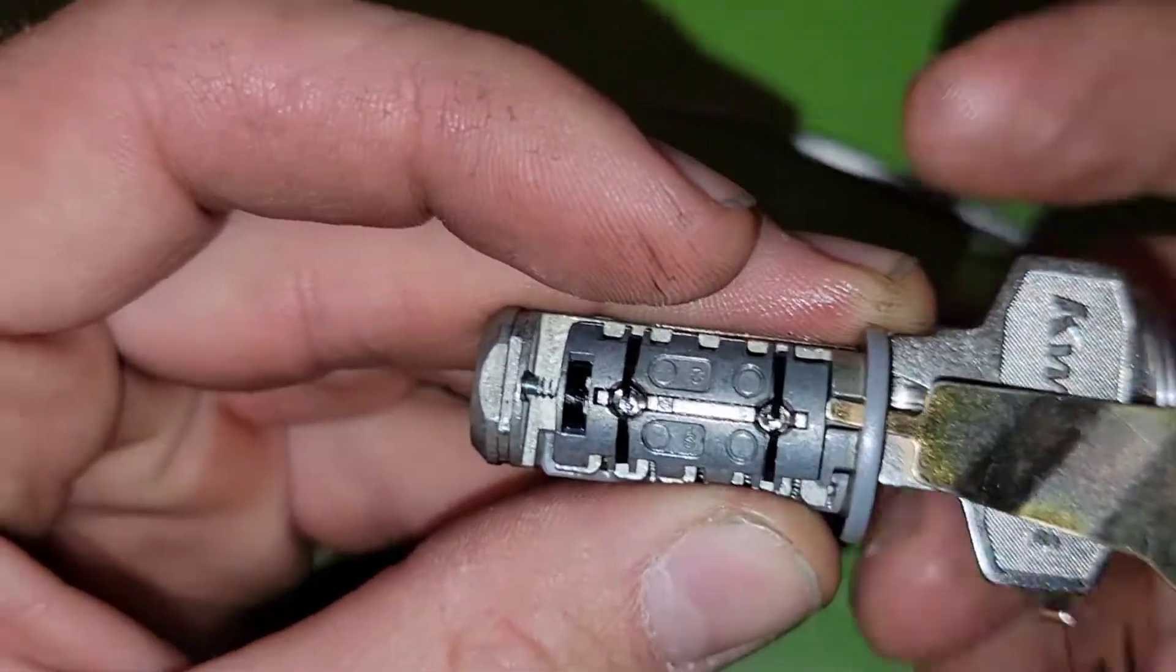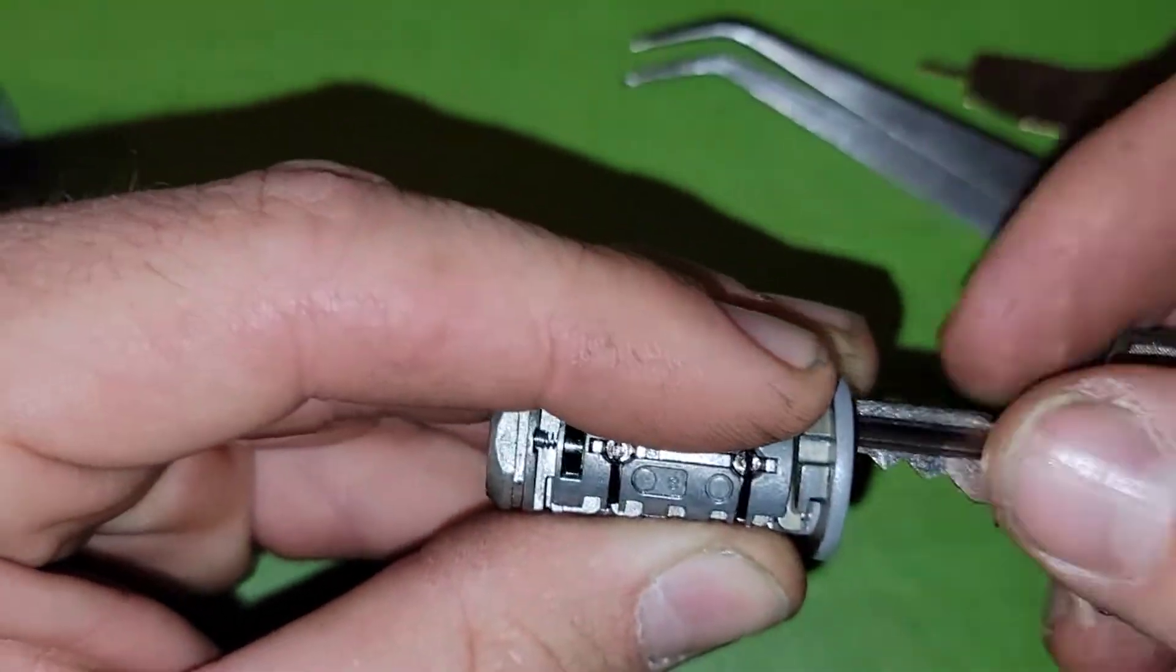There's also not a way to slip the shim in down through the side to get tension or pressure on that sidebar either as we're showing here.